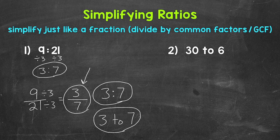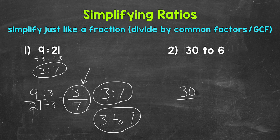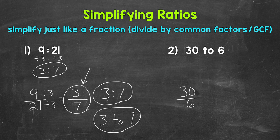Let's move on to number 2, where we have 30 to 6. I'll rewrite this ratio as a fraction as well, so 30 to 6. Now we need to think of common factors between 30 and 6. I'm going to start by using the greatest common factor, and simplify this ratio in one step. Then we'll take a look at what it looks like to simplify in multiple steps. So the greatest common factor between 30 and 6 is 6. So let's divide both of these by 6.